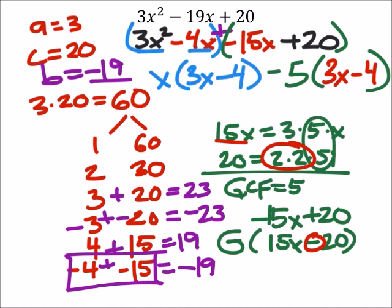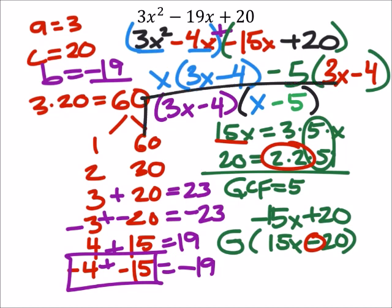Because now what we can do is we can factor out a 3x minus 4 from both terms. And what would we have left over? Well, I got the x. And then I got that minus 5. And that is our final answer.